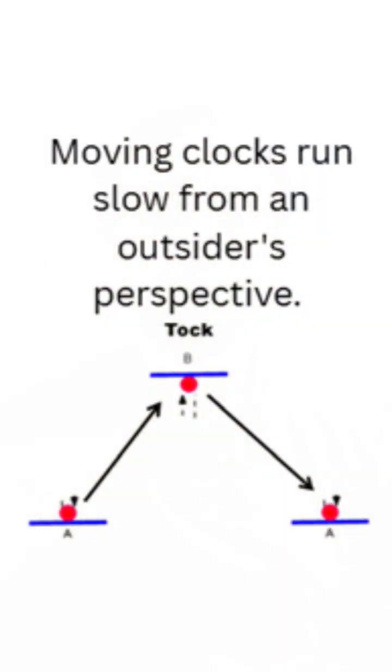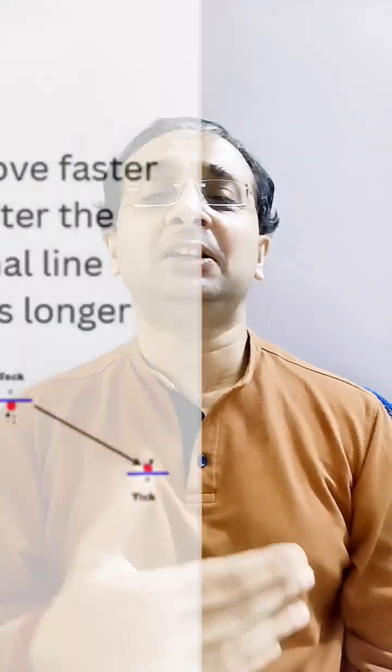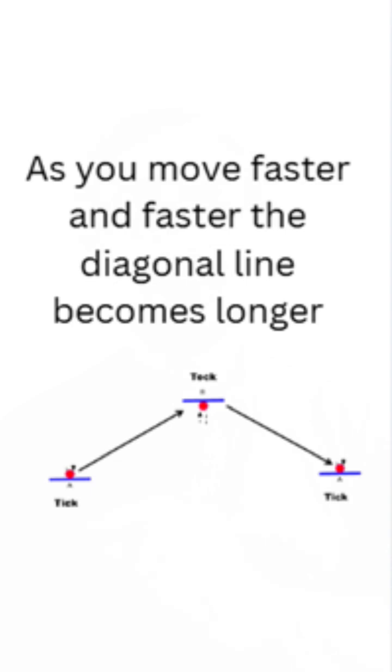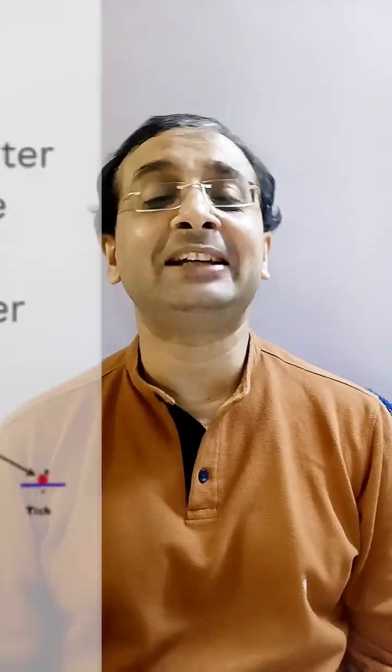Time dilation in the special theory of relativity happens because of speed — velocity — or things moving close to the speed of light. If you take that tick-tock clock and move faster, the light path that was going up and down will now start moving in a diagonal manner. The further you extend that diagonal, you'll see the tick happening here and the tock happening much later. This diagonal line shows there is time dilation.